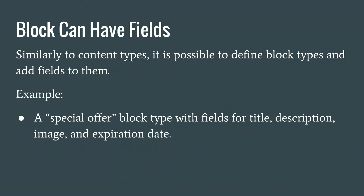Blocks can also have fields. In the same way that content types can have fields, blocks can have fields too. And in the same way there are content types, we can have block types. For example, a block type called 'special offer' with fields: title, description, image, and expiration date. We can show that block on every page as long as the expiration date hasn't passed, and have it in the sidebar.